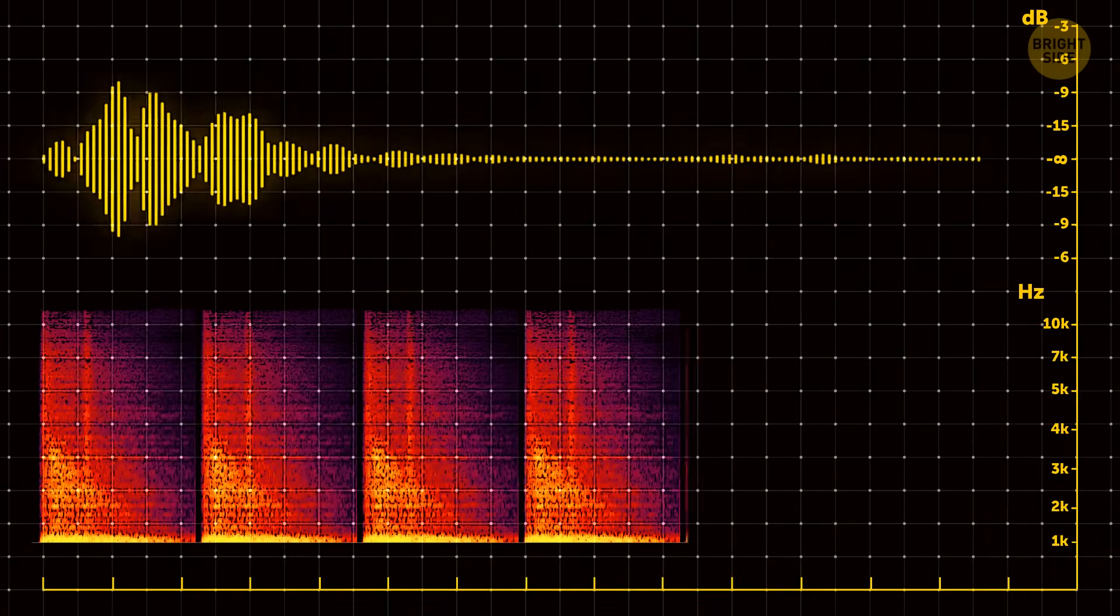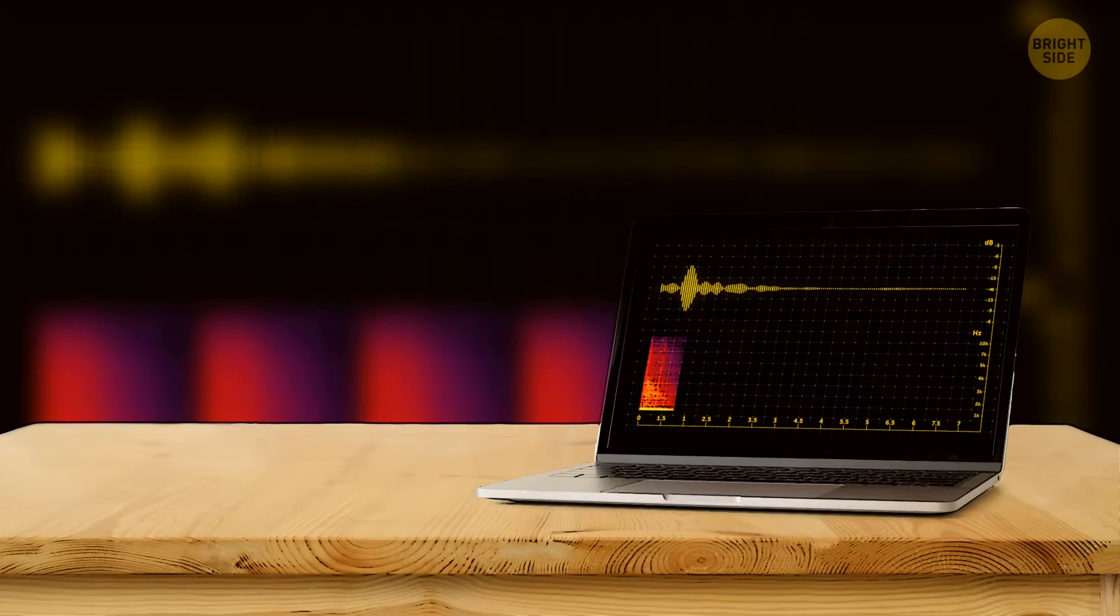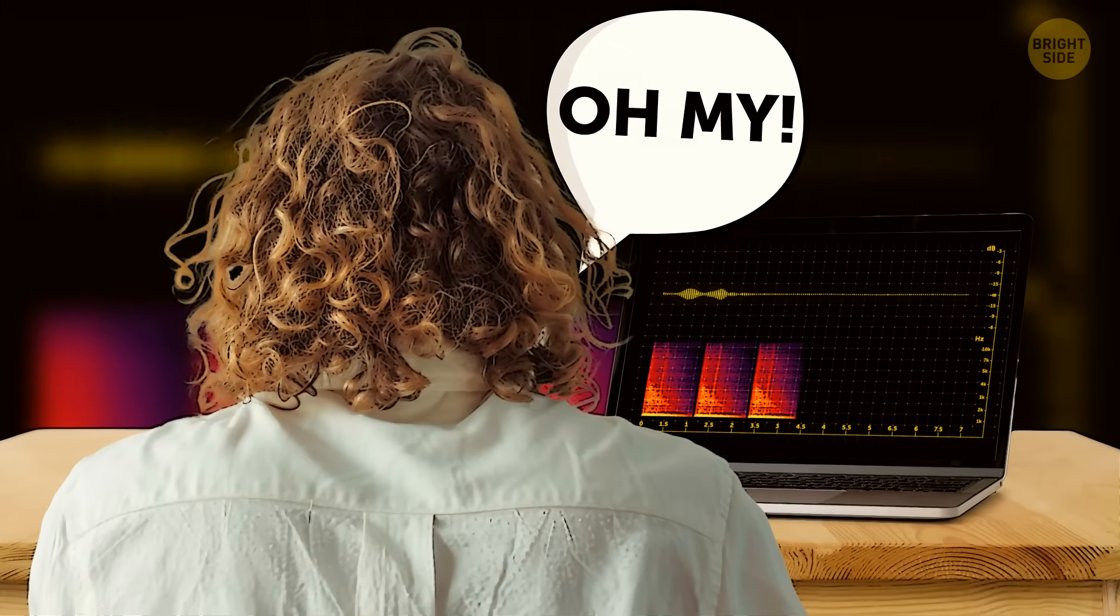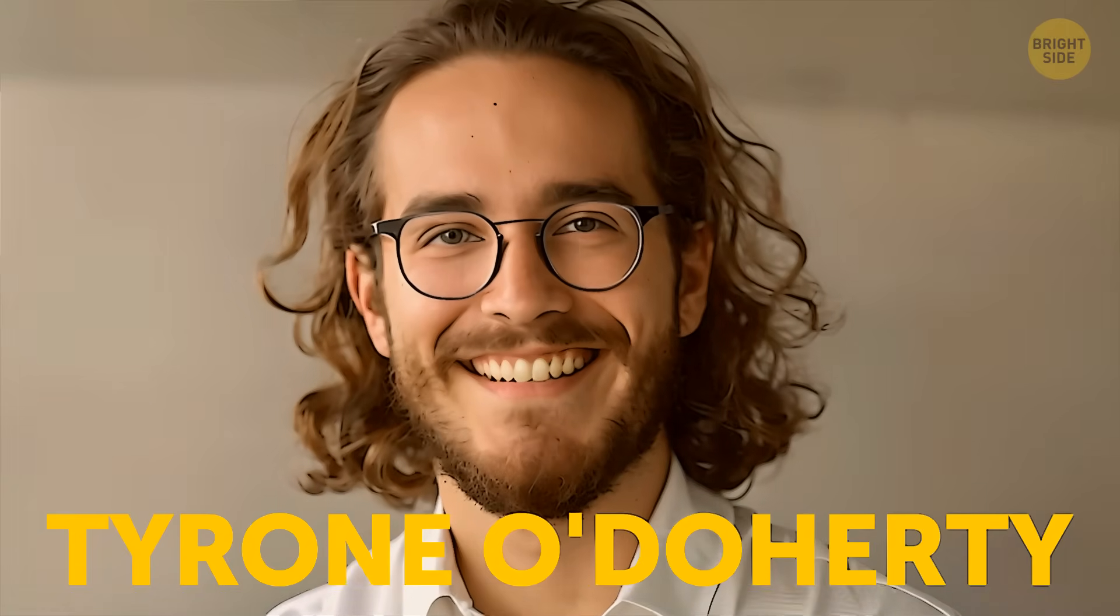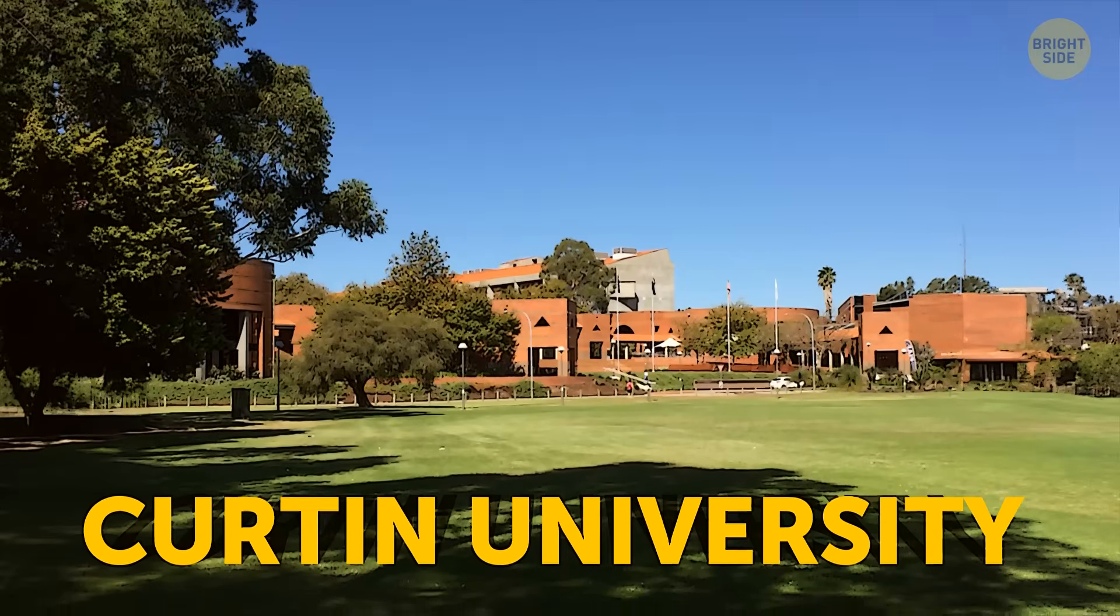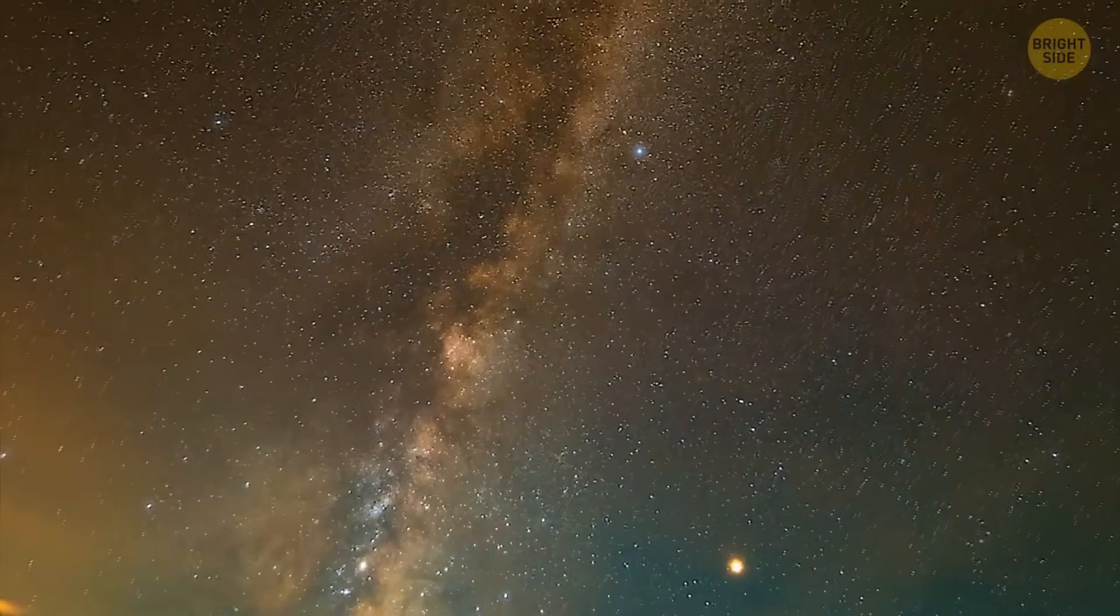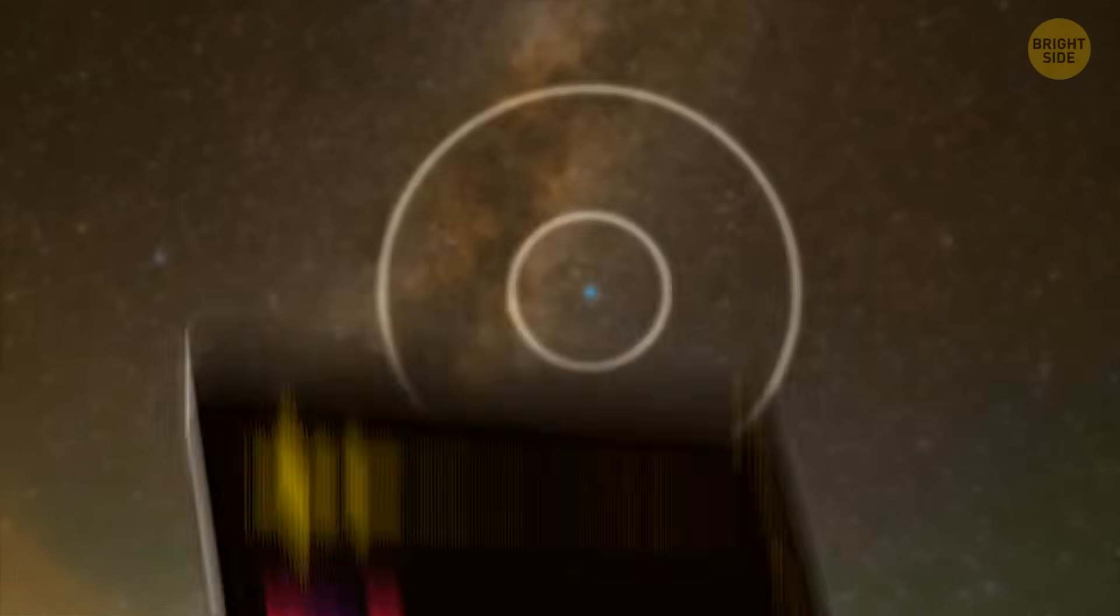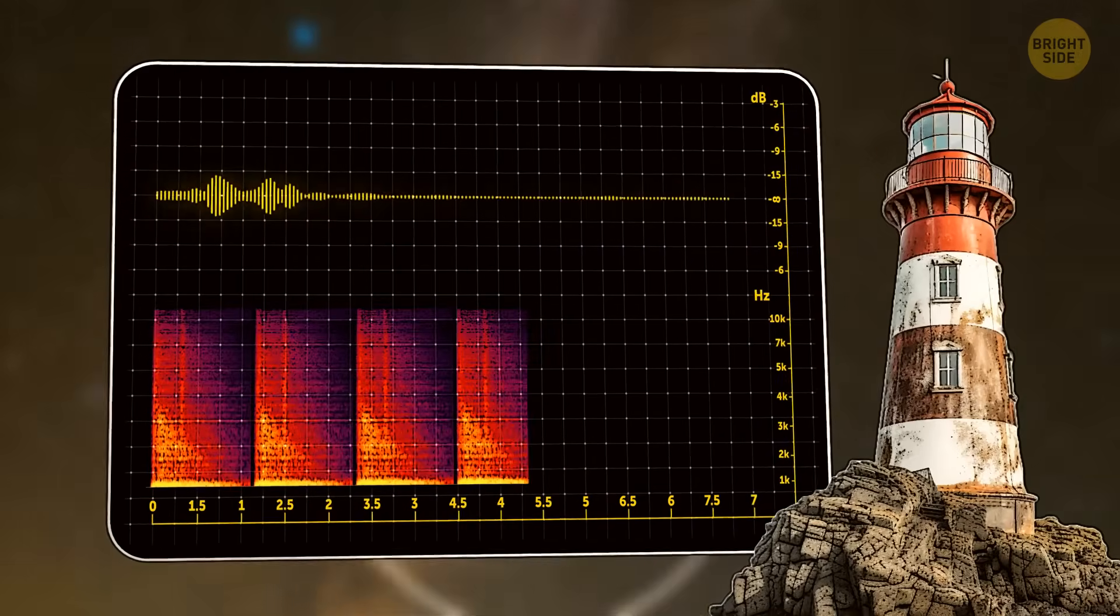This strange radio signal wasn't found by a scientist on a serious mission. It was actually discovered by a college student just doing a regular project for school. Tyrone O'Doherty, an undergrad student at Curtin University in Australia, was sifting through old data of the southern sky. He was looking for any weird blinking radio signals. He finally stumbled upon one from 2018 that seemed to shoot radio waves towards Earth like a lighthouse beam.